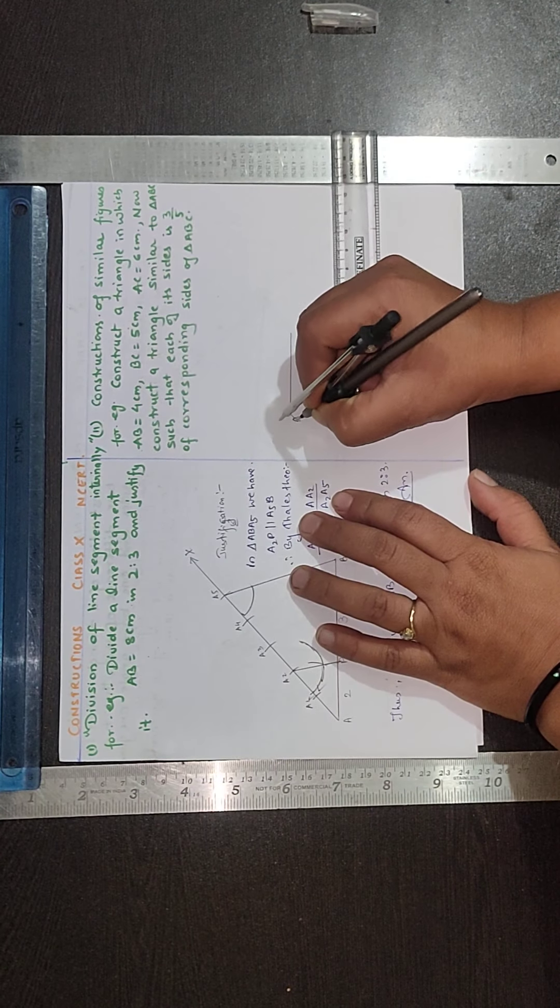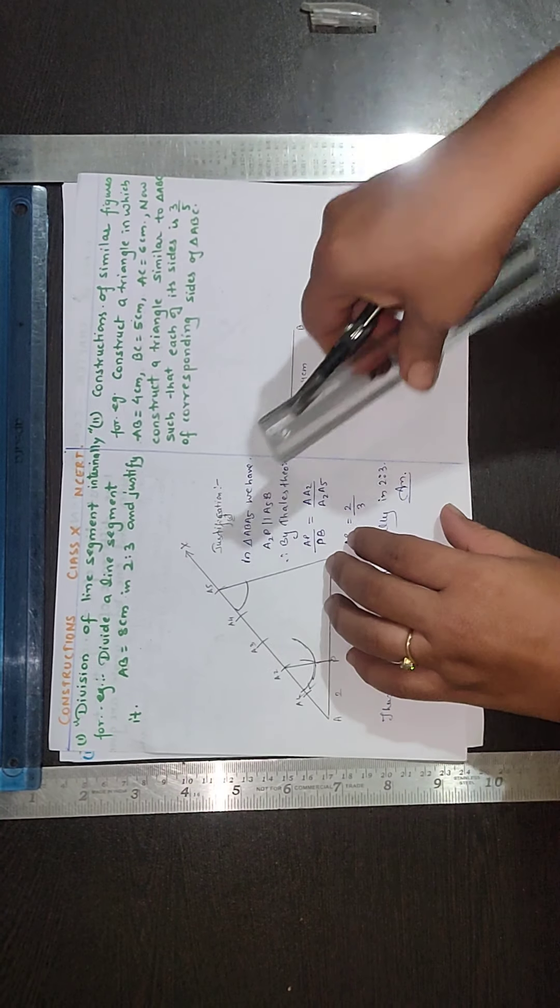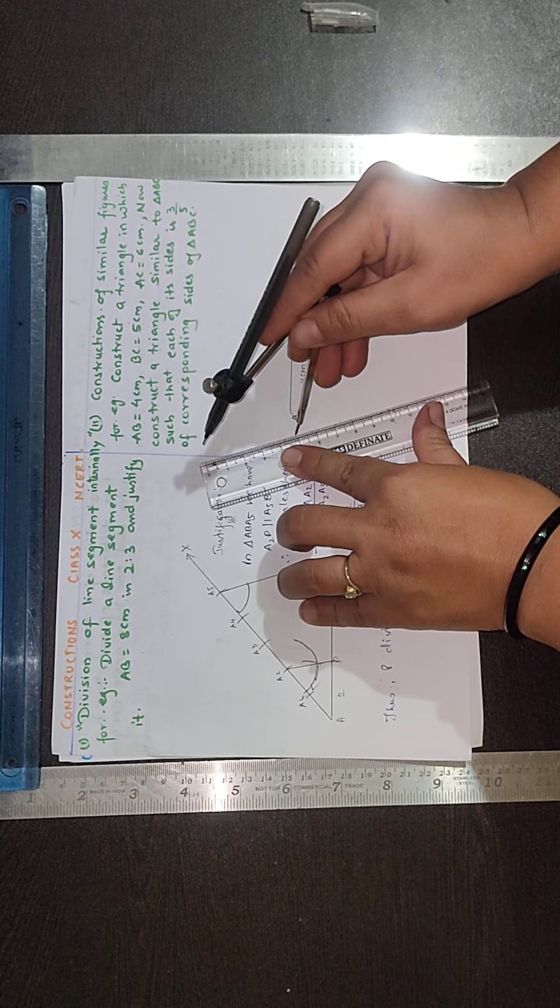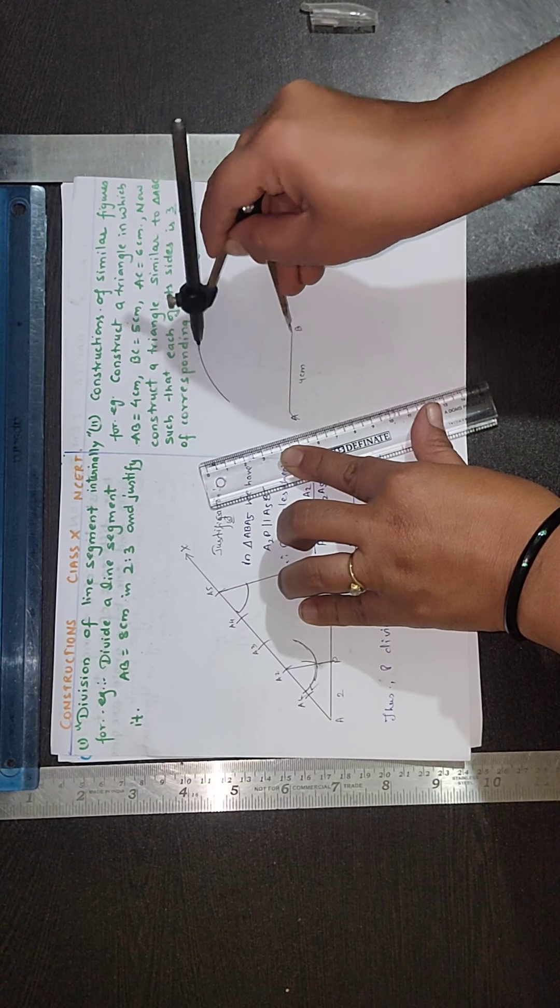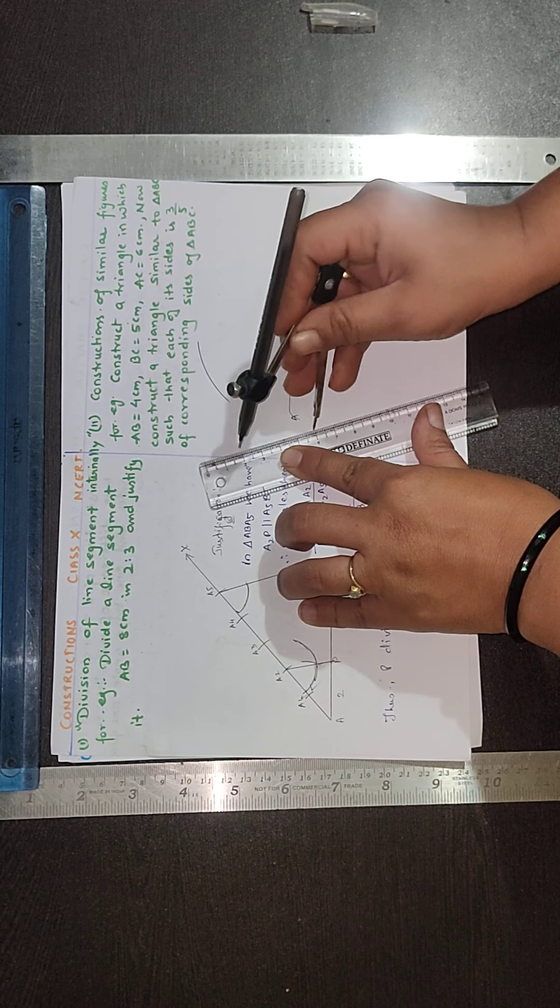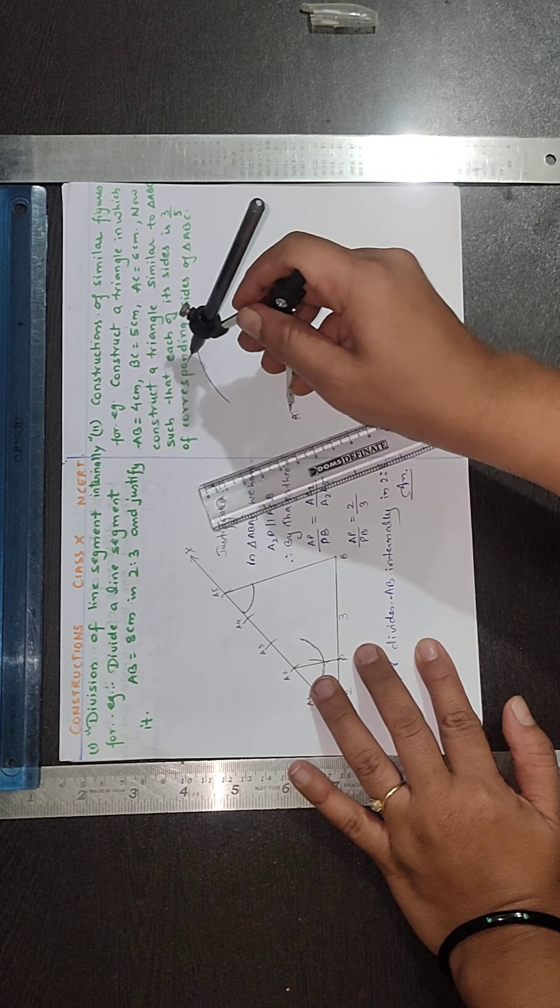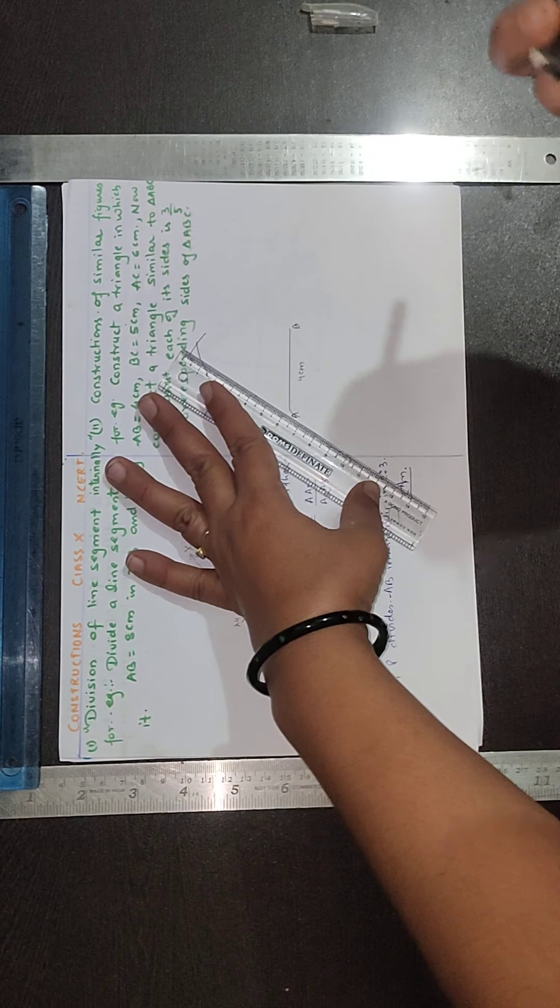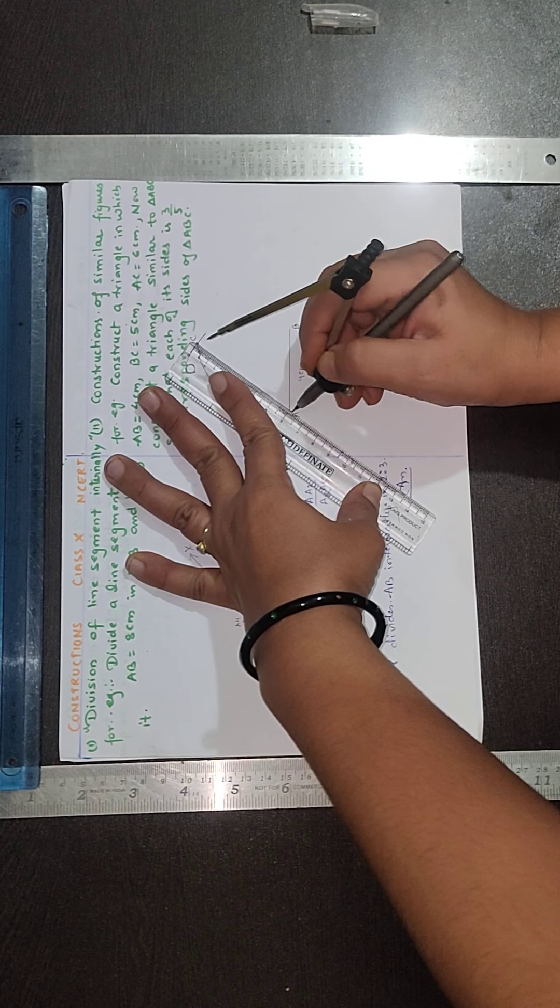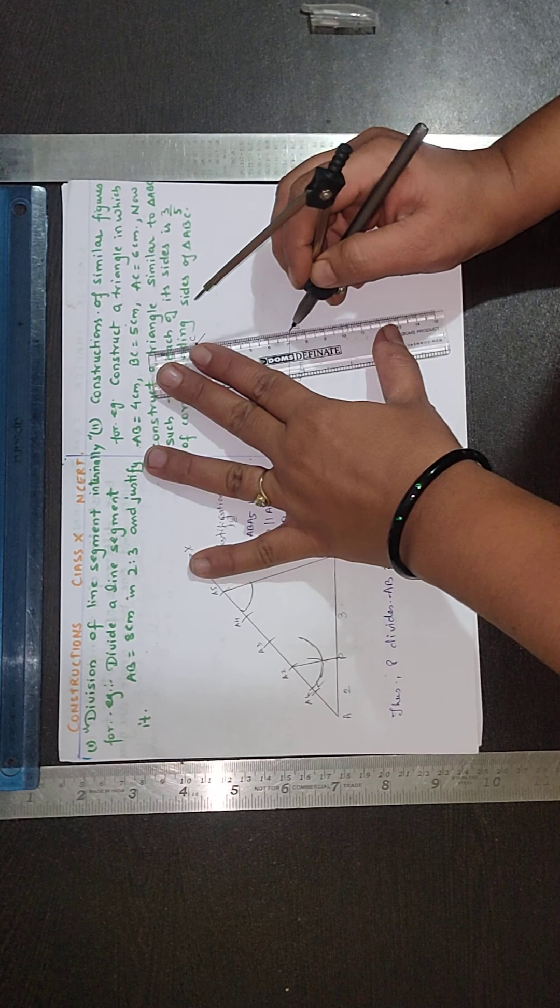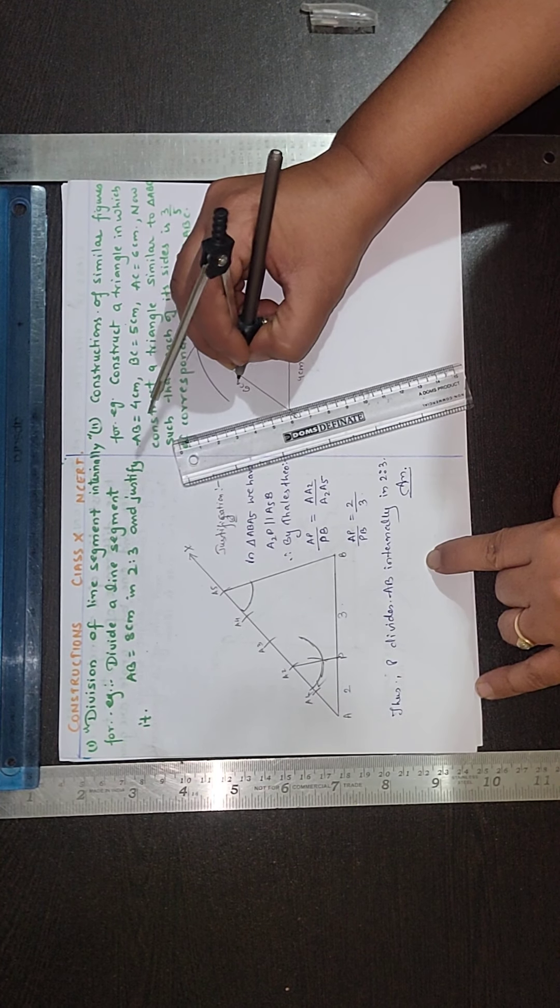So here it is AB, 4 cm. Take BC 5 cm, cut an arc like this. And AC 6 cm, taking A as radius, cutting an arc, and this intersecting point is your C. Join AC and BC. This is your 5 cm and this is your 6 cm.